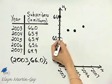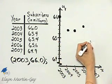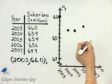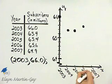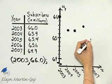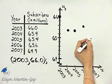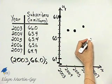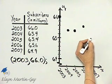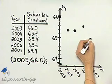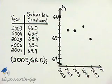We move over until we hit the 2007 year, and there we go — so there's our scatter diagram.